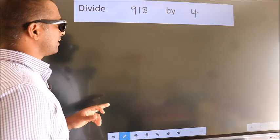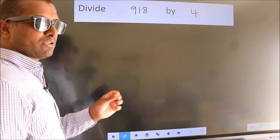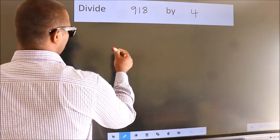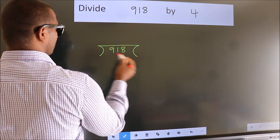Divide 918 by 4. To do this division, we should frame it in this way. 918 here, 4 here.